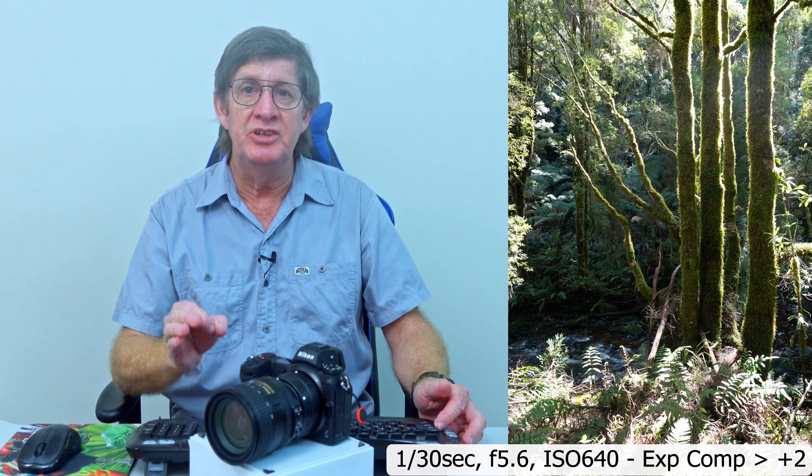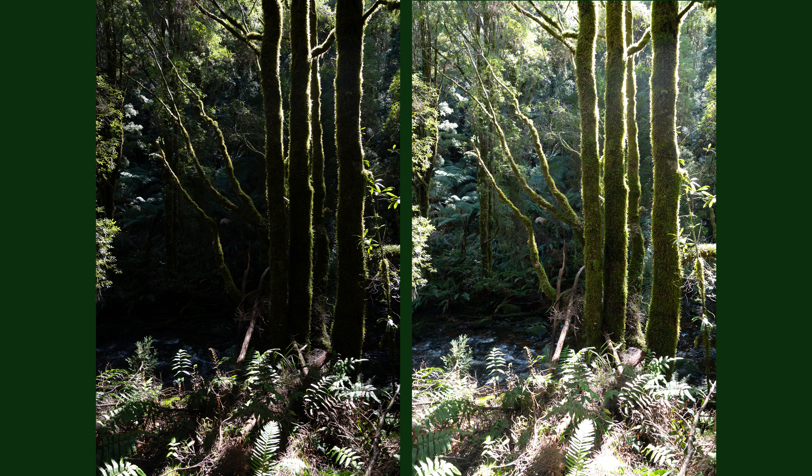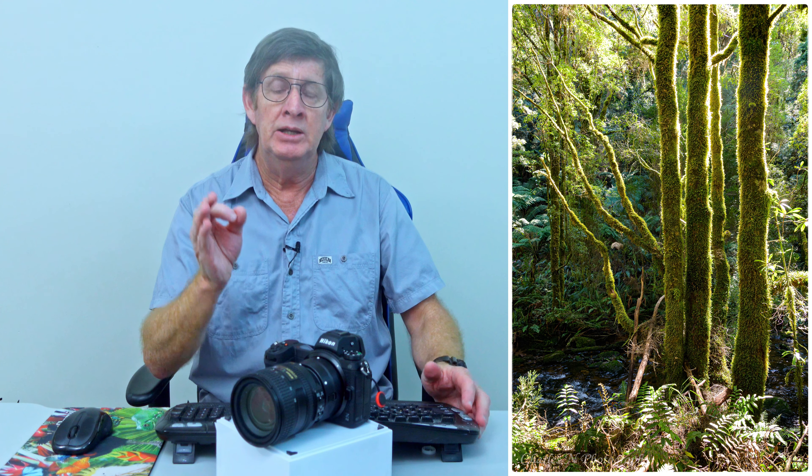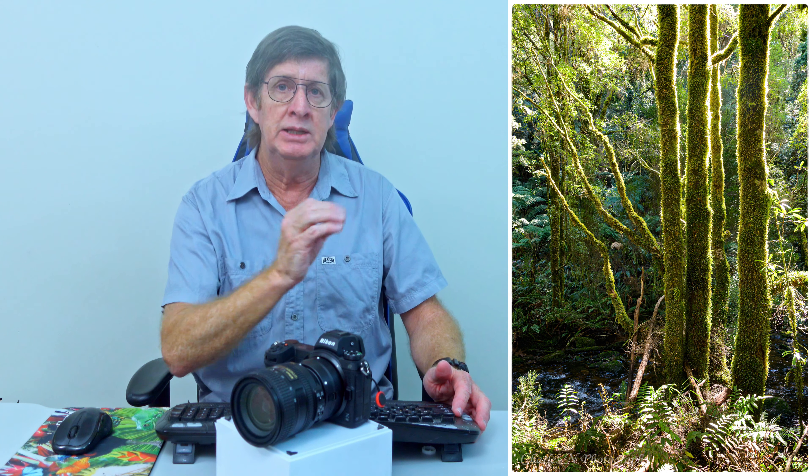Exposure compensation can also help you get a specific creative shot. This photo is correctly exposed — the trees look quite nice — but I had an idea that increasing exposure would give a high-key image. There was a lot of moss on these trees and it looked beautiful, so I increased exposure compensation by plus two. The image is very different from the first: two stops overexposed, but now we can see all that moss and the trees look like they're glowing. This is the image I had in mind, and I specifically overexposed by two stops to achieve it.